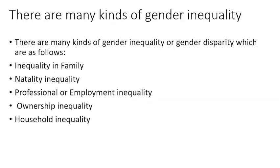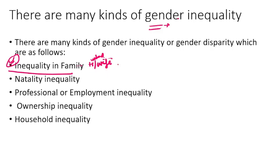Now, we see many types of gender inequality in society. You will see inequality in the family, between husband and wife, within the family unit. One type is natality inequality — this is the inequality you see in neonates.